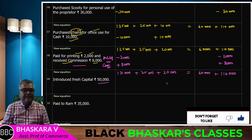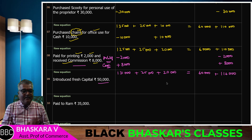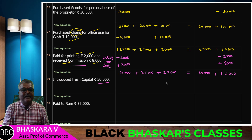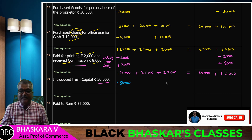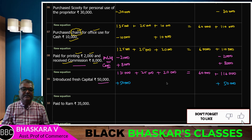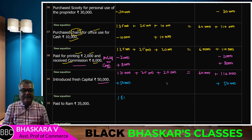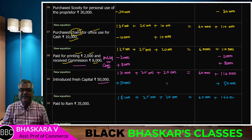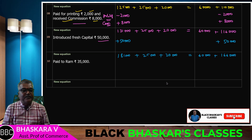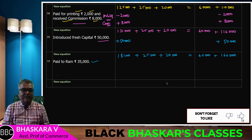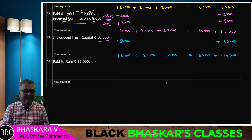Capital fresh capital introduced — cash balance students: 500 rupees added to cash, so cash increases and capital increases. New equation: cash 1,81,000 plus goods 25,000 plus furniture 20,000 equals creditors 60,000 plus capital 1,66,000. Next transaction: pay to Rams rupees 35,000 — cash balance reduces.